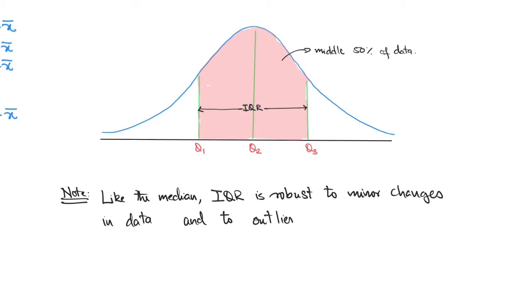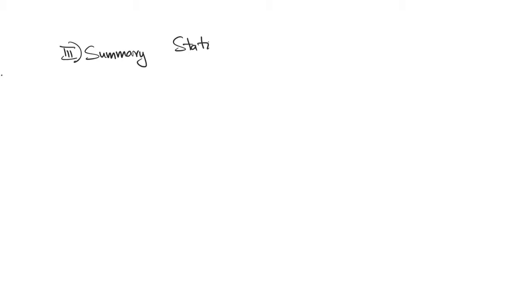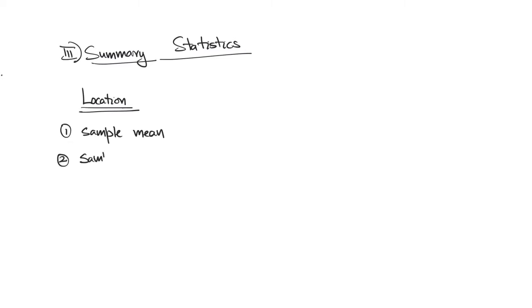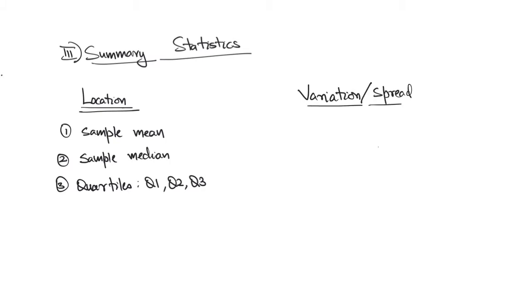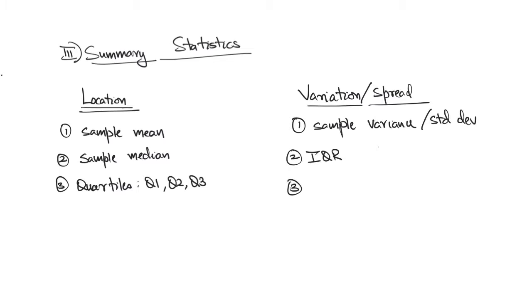Now to summarize the statistics that we have studied so far: we have studied the statistics corresponding to location, which are given by the sample mean, the sample median, the quartiles, and the percentiles. And we have also studied statistics corresponding to variation or the spread, which are given by the sample variance or the sample standard deviation, the interquartile range, and the actual range, which is the maximum inside the sample minus the minimum inside the sample.